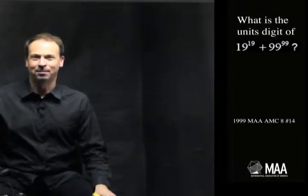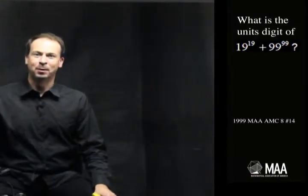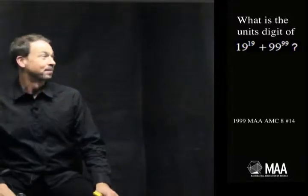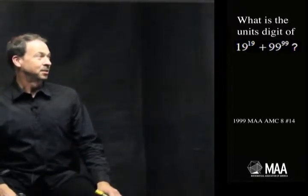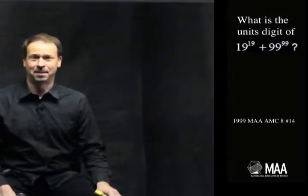G'day. Welcome to another Curriculum Burst. This time let's do a question for the Great 8 exam. It goes as follows: What is the unit's digit of 19 to the 99th power plus 99 to the 99th power?